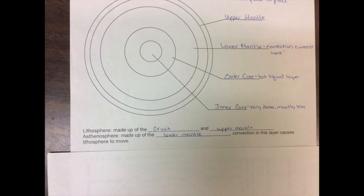So just a quick review, we have the lithosphere, which is made up of the crust as well as the upper mantle. And then directly beneath that we have the asthenosphere, made up of the lower mantle. And this is the layer where convection occurs.